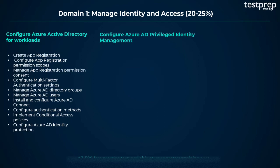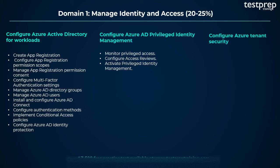Number 2: Configure Azure AD Privileged Identity Management. It contains three subtopics: monitor privileged access; configure access reviews; and activate privileged identity management. Number 3: Configure Azure tenant security. It contains two subtopics: transfer Azure subscriptions between Azure AD tenants; and manage API access to Azure subscriptions and resources.